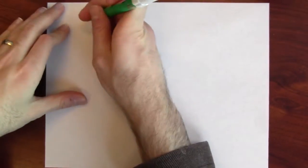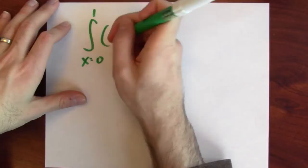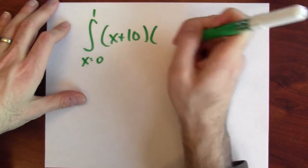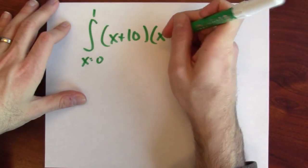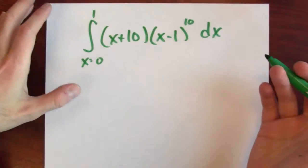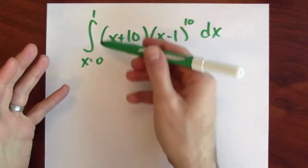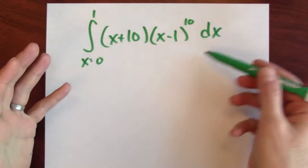Even integrating something as easy as a polynomial can be rather surprising. Let's integrate from x equals 0 to 1, just a polynomial, x plus 10 times x minus 1 to the 10th power dx. So there's some integration problems, just an integration problem for a polynomial.